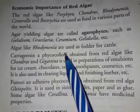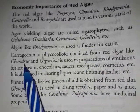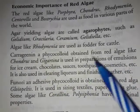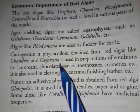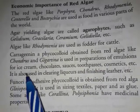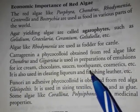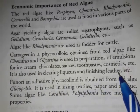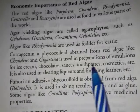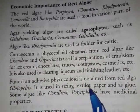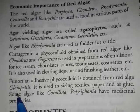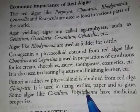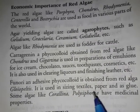Algae like Rhodymenia are used as fodder for cattle. Carrageenan is a phycocolloid obtained from red algae like Chondrus and Gigartina. It is used in preparation of emulsions for ice creams, chocolates, sauces, toothpaste, cosmetics, etc., and also in clearing liqueurs and finishing leather. Funori, an adhesive phycocolloid, is obtained from the red alga Gloiopeltis. It is used in sizing textiles and paper and acts as a glue.